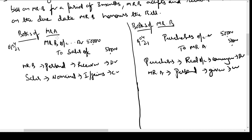In the books of Mr A, Mr B is shown as a debtor because he owes money to Mr A. In the books of Mr B, Mr A is shown as a creditor because Mr B owes money to Mr A. This debtor-creditor position is created due to the transaction of sale of goods on credit by Mr A to Mr B.